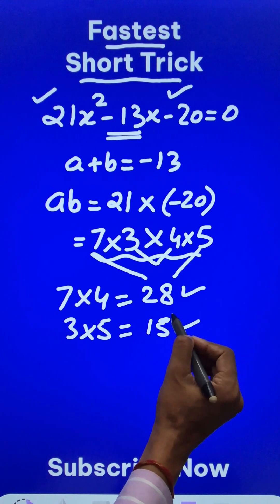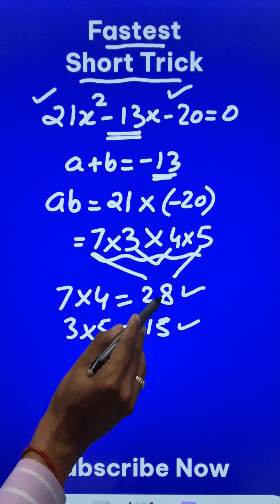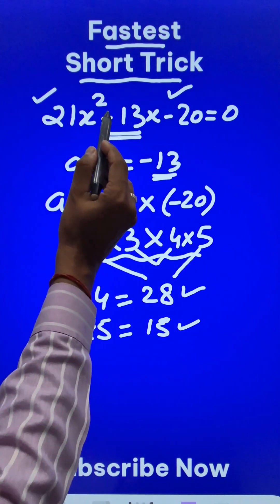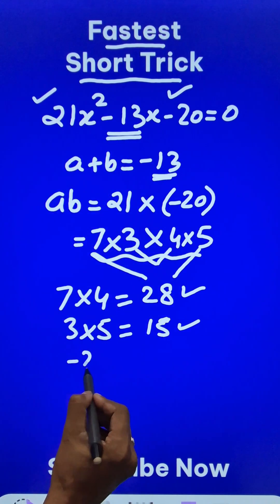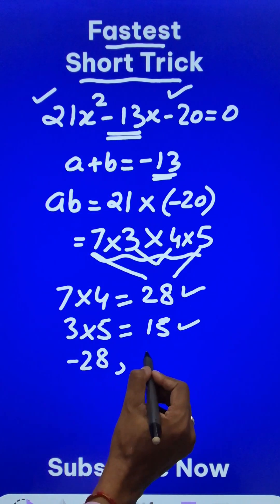Now, 28 and 15—I can obtain 13 from that by subtracting these two. Therefore, the middle term split factors: because this is negative, the larger one will be negative and the smaller one will be positive.